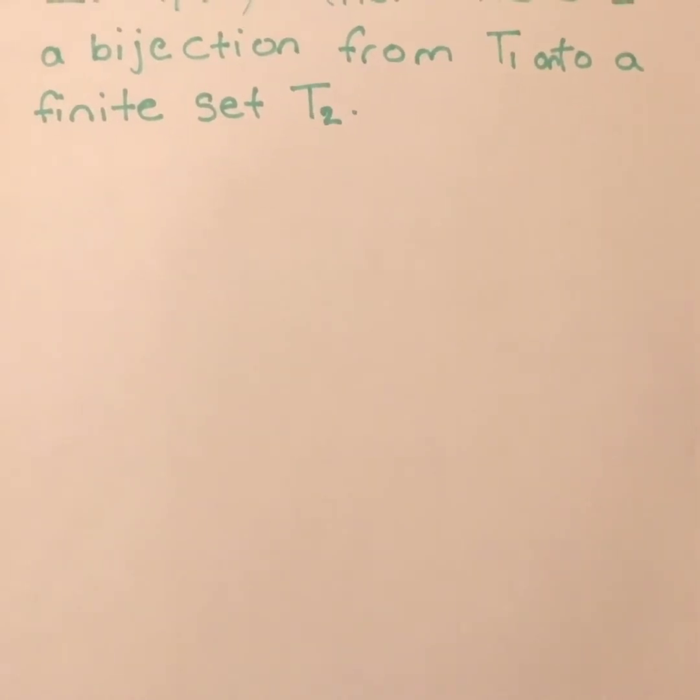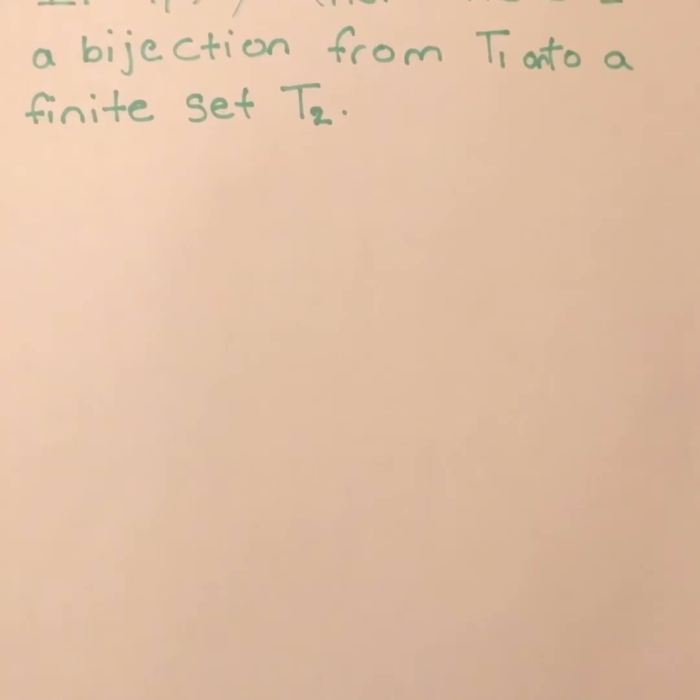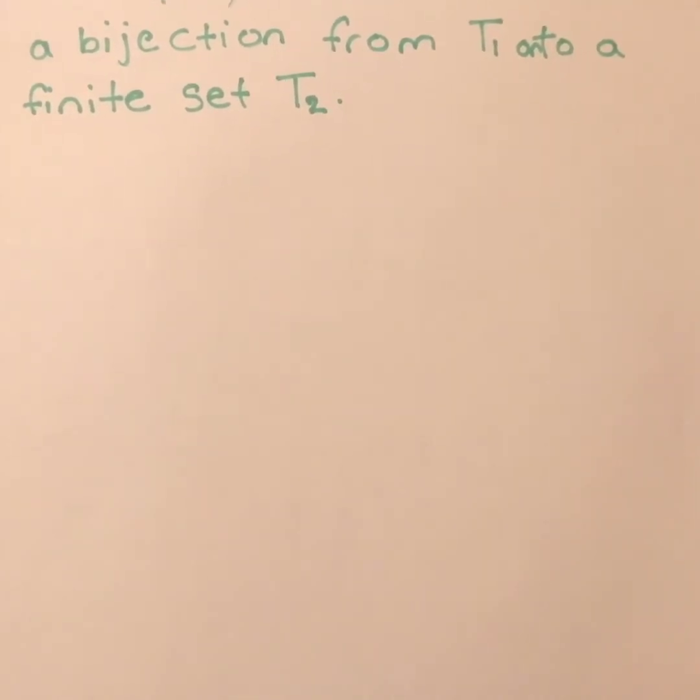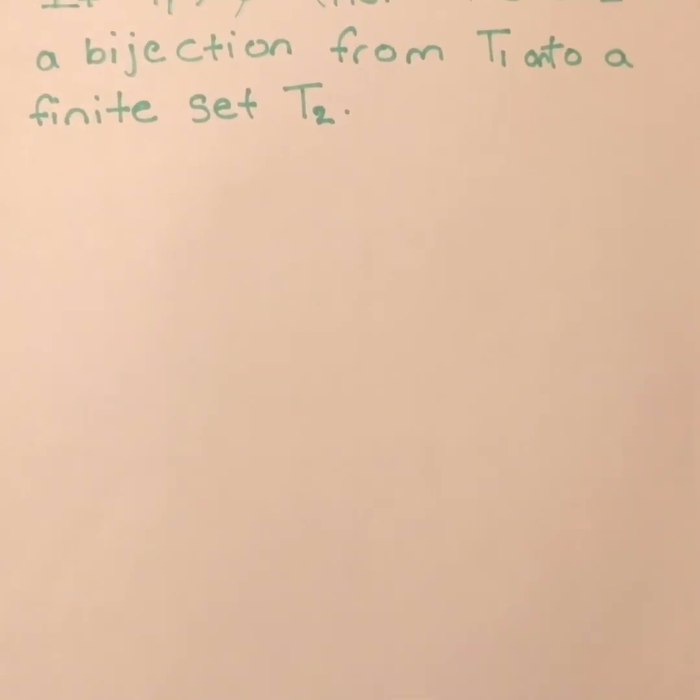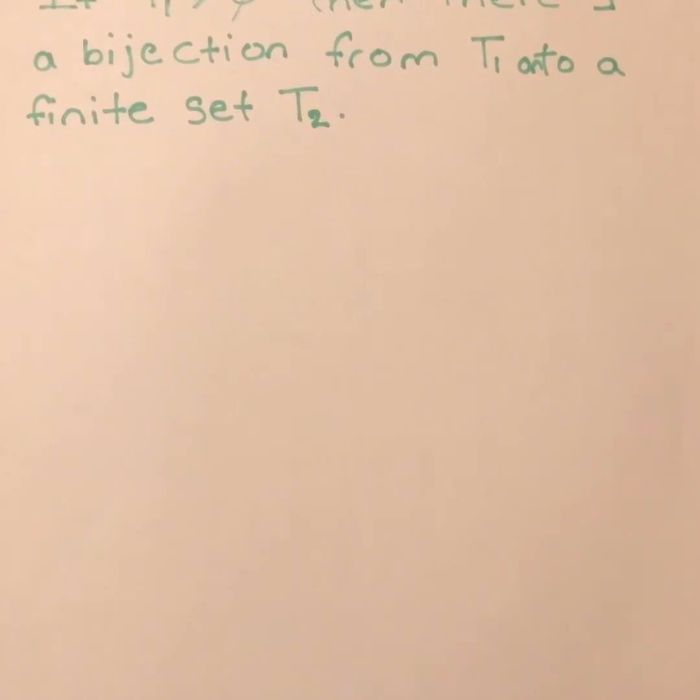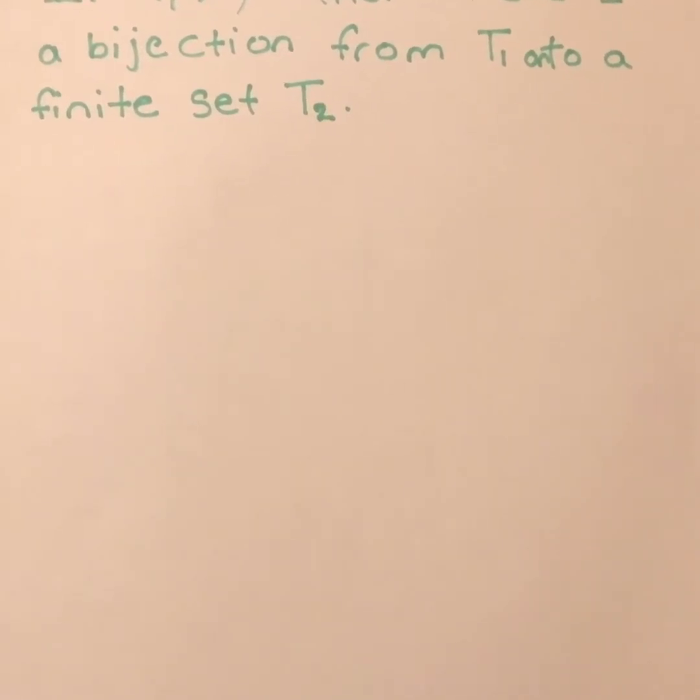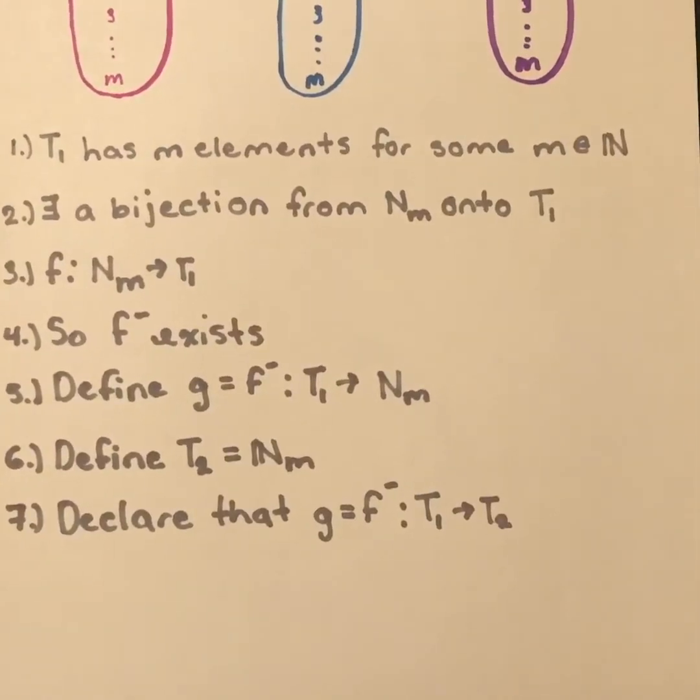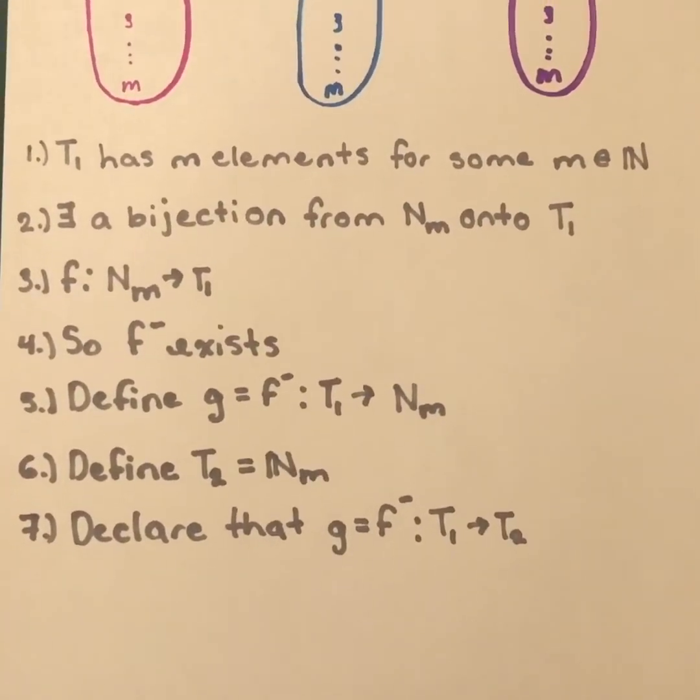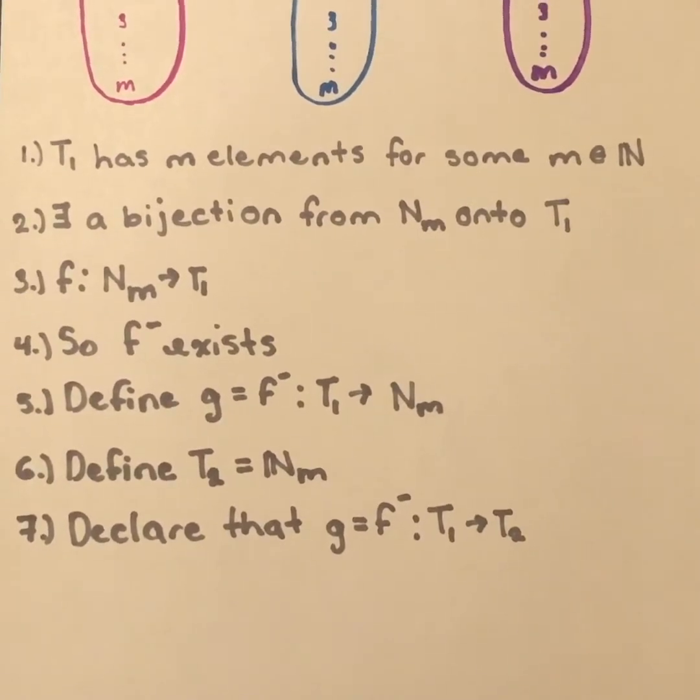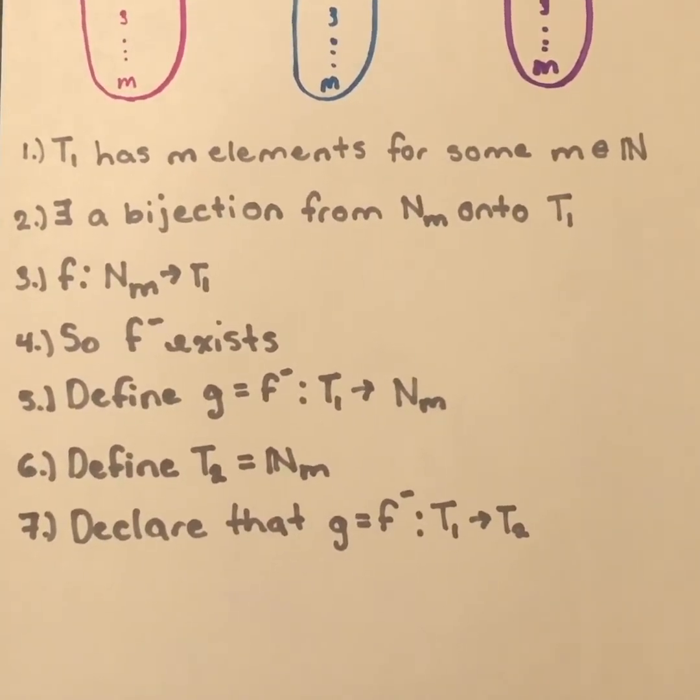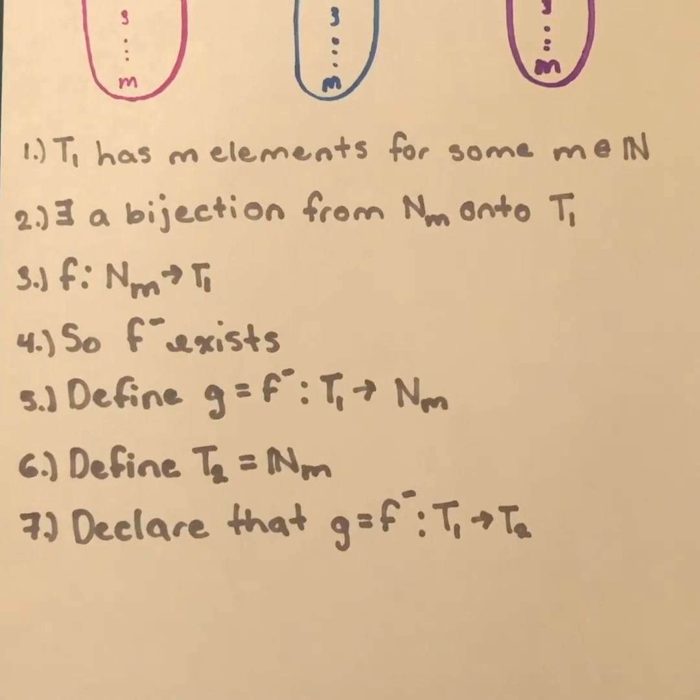So the first thing I'm going to do is prove that if T1 is a non-empty finite set then there exists a bijection from the set T1 onto a finite set T2. I think that one of the most useful things you can do is be very comfortable with the idea of bijections before you try to do this problem.